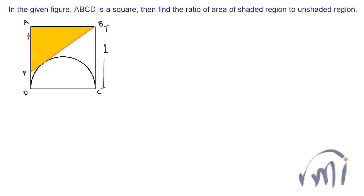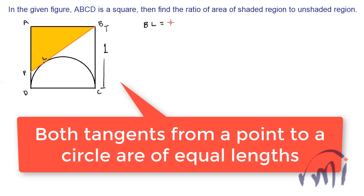So to find the area of triangle ABP, we have to know the length AP. Suppose the point at which the line BP is tangent to the circle is L, then BL will be equal to BC. These are the two tangents from point B on the circle and each of them will be equal to 1.